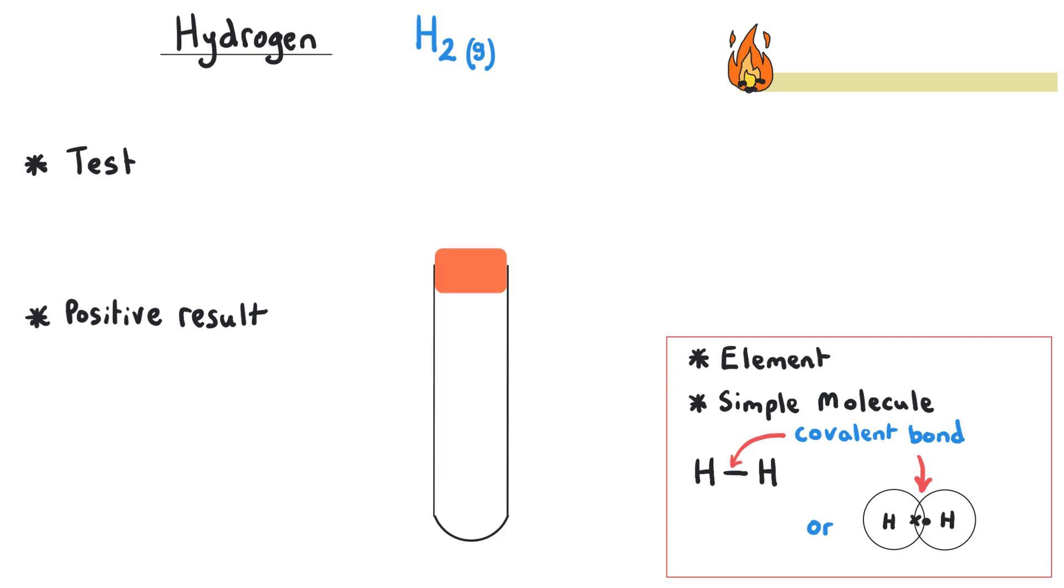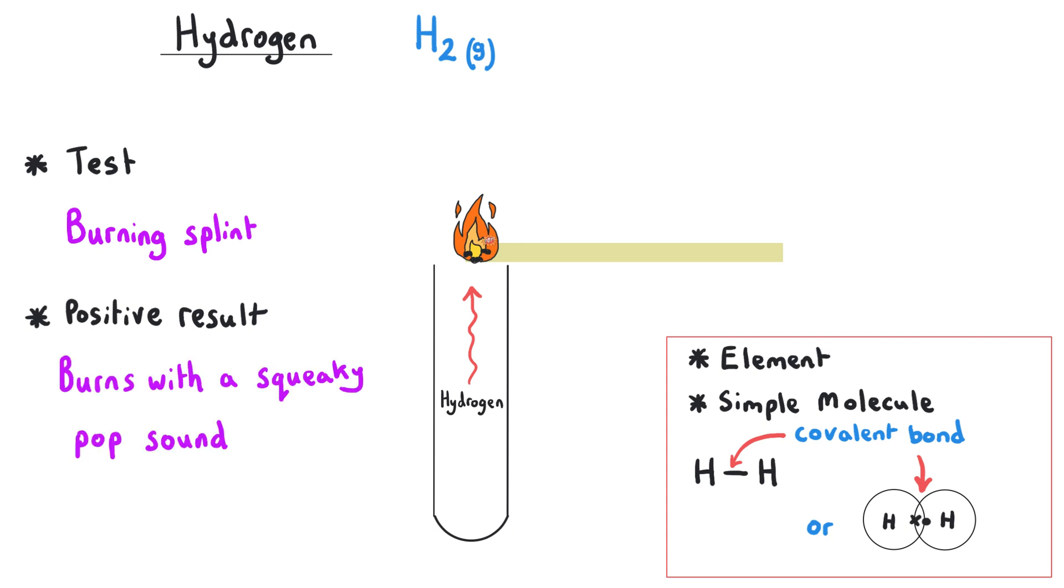When we test for hydrogen, we might take a tube of hydrogen gas in a test tube, remove the bung, and then take a burning splint, which we might say a lit splint, but what's absolutely crucial is that there is a flame. When we move this splint towards the neck of the test tube, if hydrogen gas is present, that gas will burn with a squeaky pop sound. The crucial words there are the pop sound. You can get away without saying the squeaky part, but we must mention the pop.